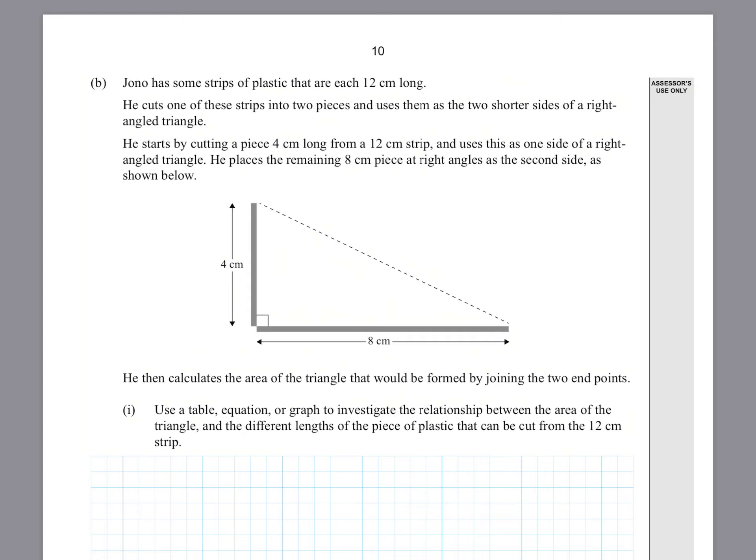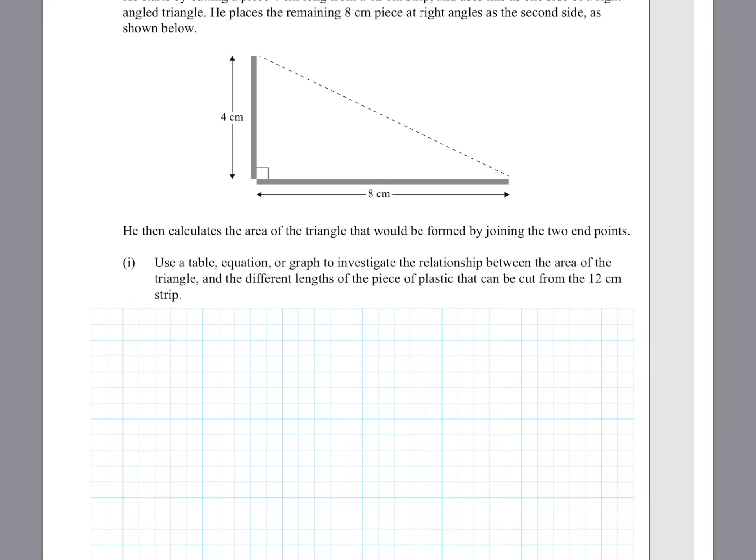Jono has some strips of plastic that are each 12 cm long. He cuts one of these strips into two pieces and uses them as two shorter sides of a right-angle triangle. He starts by cutting a piece 4 cm long from a 12 cm strip and uses this as one side of a right-angle triangle. He places the remaining 8 cm piece at right angles as the second side. He then calculates the area of the triangle formed by joining the two endpoints. Use a table, equation, or graph to investigate the relationship between the area of the triangle and the different lengths of the piece of plastic that can be cut from the 12 cm strip.